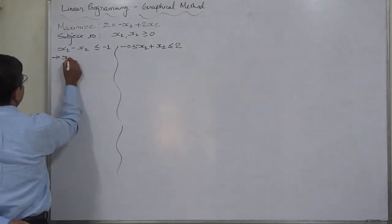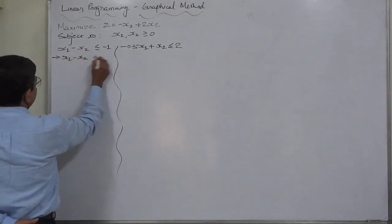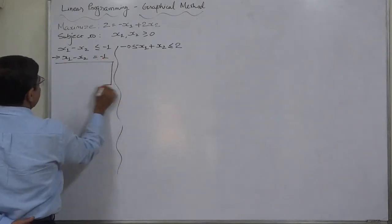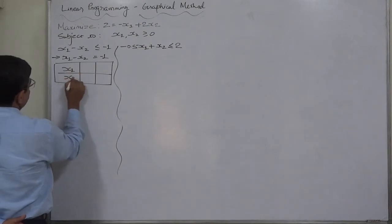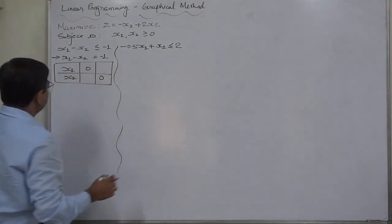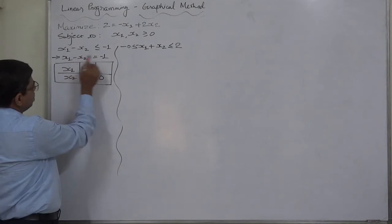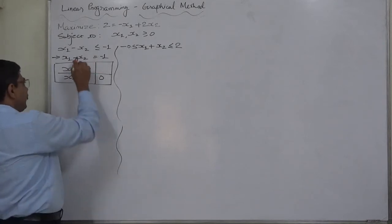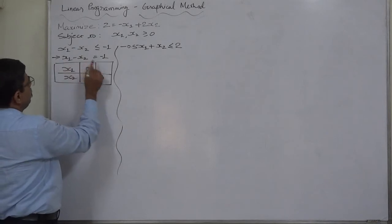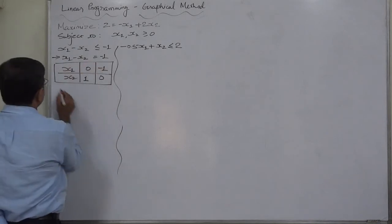x1 minus x2 equals to minus 1. Now we can have the two points to draw the straight line of this equation. If x1 takes value 0, then it will be minus x2 equals to minus 1, so x2 equals to 1. If x2 takes value 0, then it will be x1 equals to minus 1.